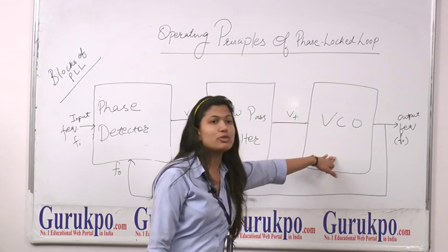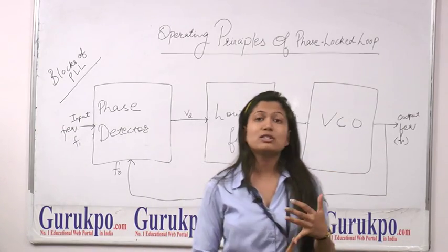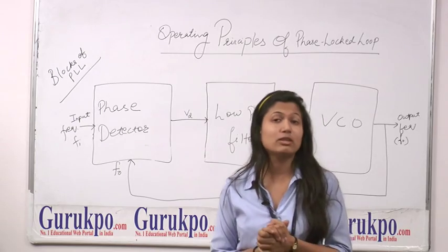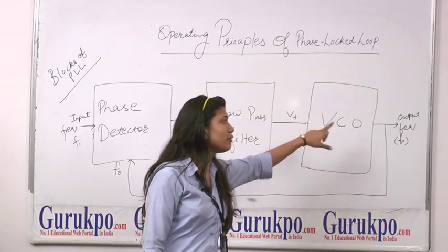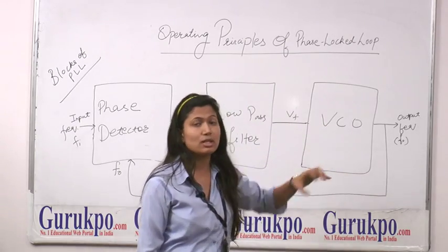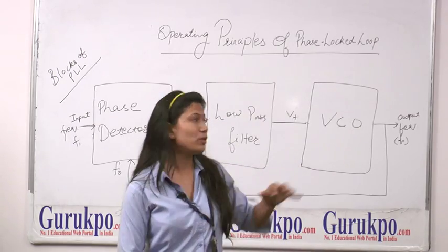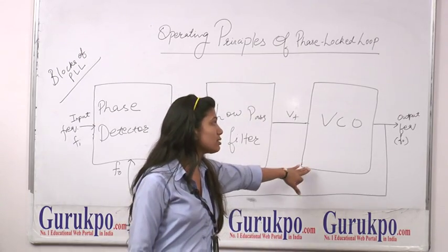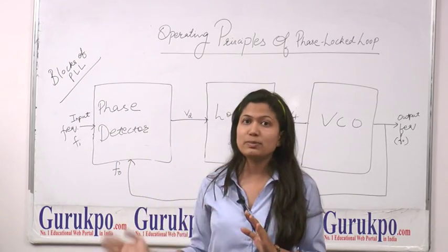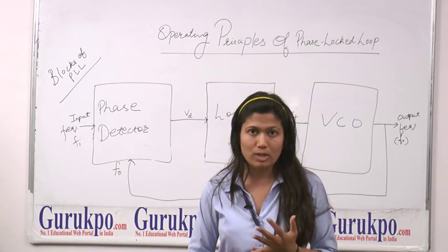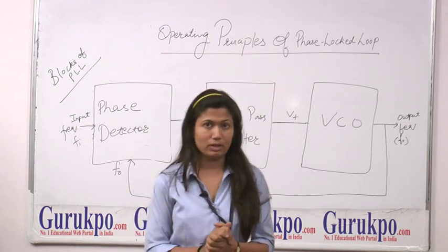Finally, the output of the Low Pass Filter is amplified and applied to the Voltage Controlled Oscillator. The VCO generates a frequency, and the VCO control voltage controls the output frequency in such a manner that the output frequency becomes equal to the input frequency, reducing the difference between them to a minimum level.